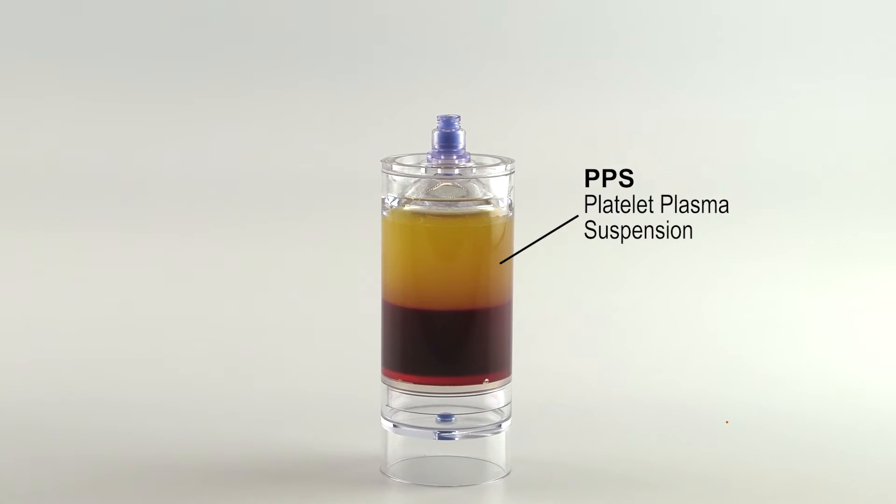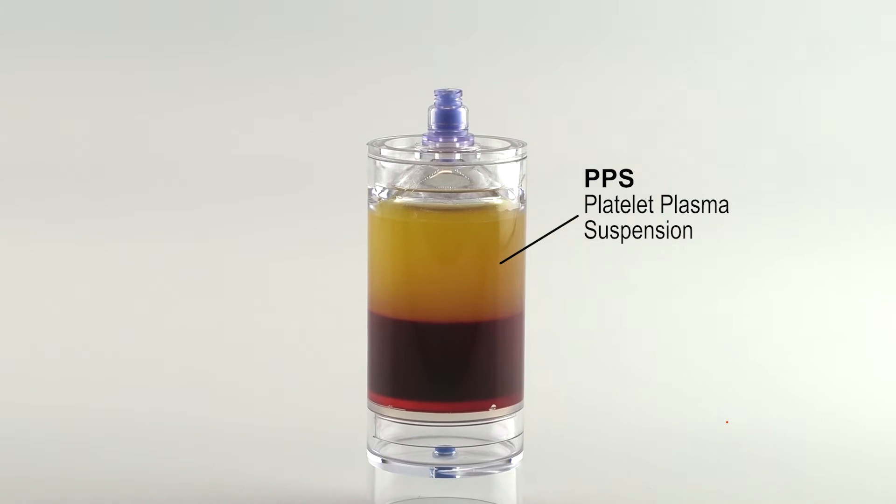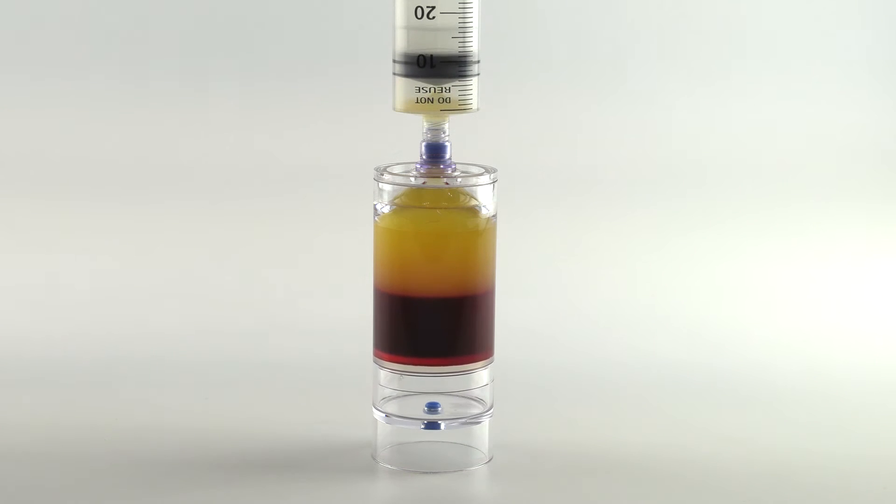After centrifugation, the platelet plasma suspension, or PPS, will be separated above the red blood cell layer. Attach a sterile syringe to the top port and aspirate the platelet plasma suspension.